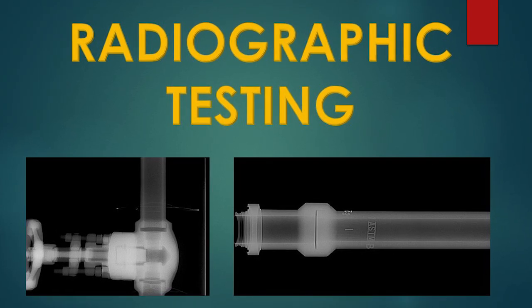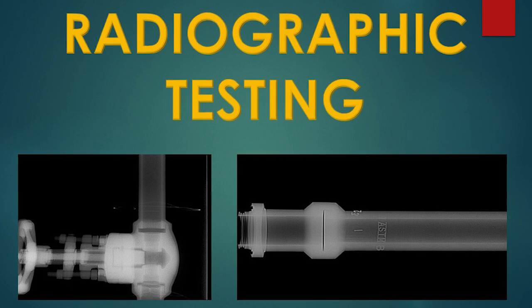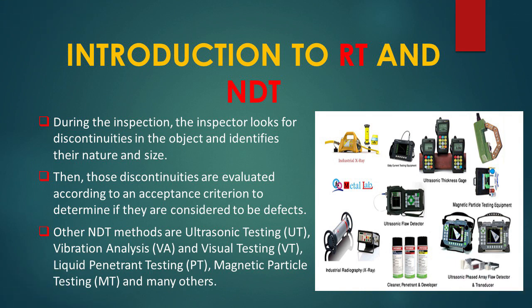In this video we are going to talk about one of the most important applications of EM waves: industrial radiographic testing. As the name suggests, this method uses radiation to obtain an image in order to inspect an object. It is one of the many methods used for non-destructive testing, popularly known as NDT, conducted in industry to evaluate the properties of material without damaging it and to ensure the material is free of any errors and impurities. Radiographic testing helps in identifying the nature and size of discontinuities, which are then evaluated according to acceptance criteria to determine whether they qualify as defects.